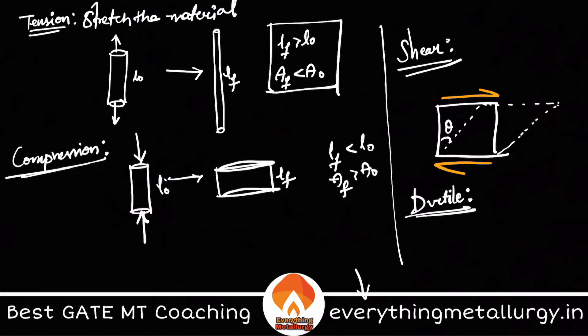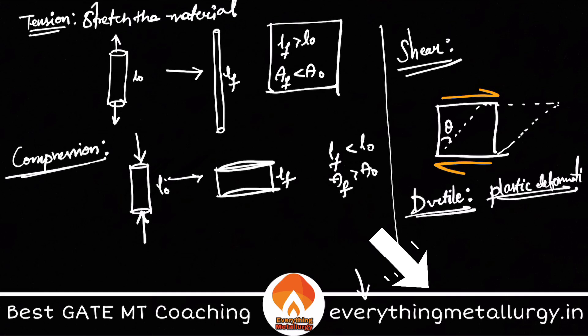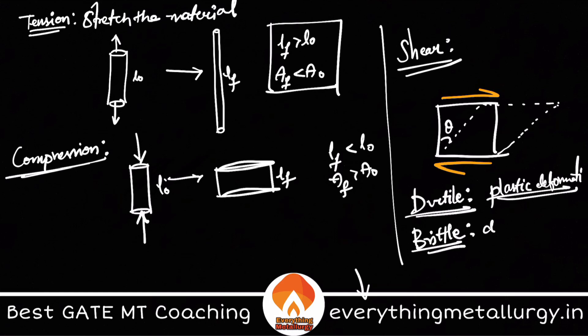A ductile material is something which undergoes plastic deformation during application of a load, whereas a brittle material does not undergo plastic deformation. I have used the term plastic deformation many times, so now let us see what it means. First of all, what is deformation? Deformation means deforming a body — changing the shape of a body. There are three different kinds of deformations.